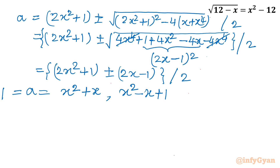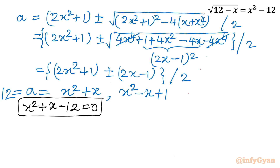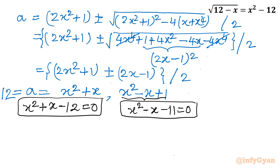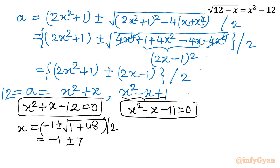Since a equals 12, we now have two quadratic equations to solve: x squared plus x minus 12 equals 0, and x squared minus x minus 11 equals 0. For the first equation, applying the quadratic formula: x equals minus 1 plus or minus square root of (1 plus 48) divided by 2, giving minus 1 plus or minus 7 over 2. Taking plus gives x equals 3, taking minus gives x equals minus 4. So two values are confirmed.